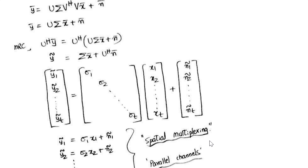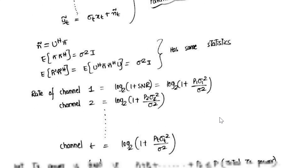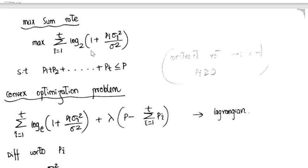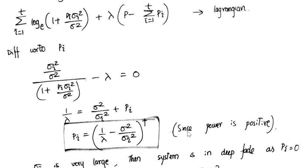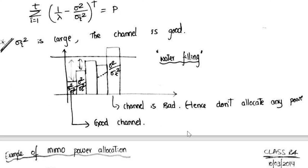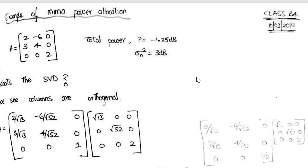The concept of spatial multiplexing or parallel channels. Maximum sum rate problem is converted to convex optimization problem and a water filling problem. Water filling problem has been explained. Based on water filling problem, an example is taken over here.